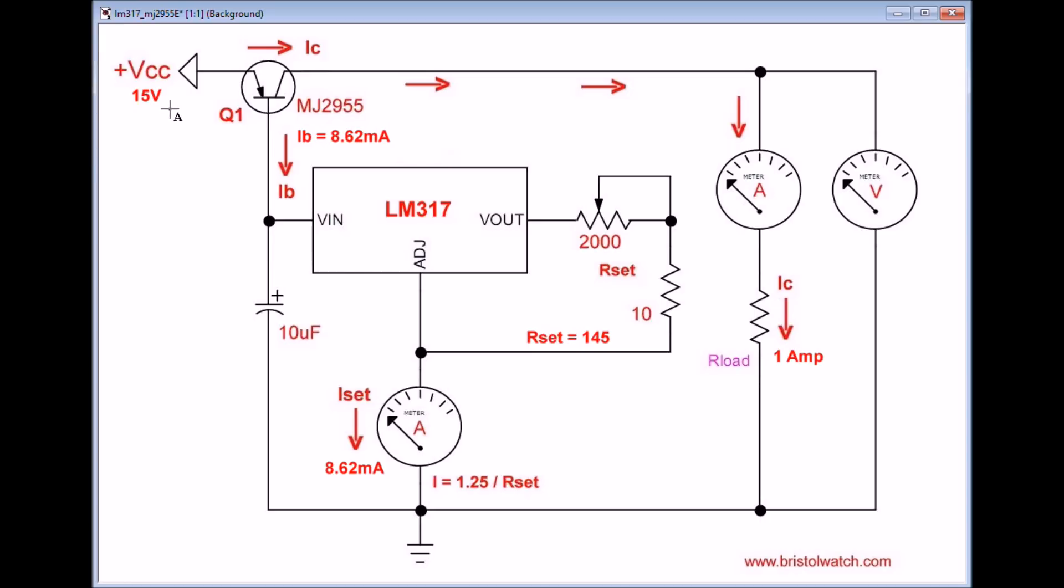We have a current flow from emitter to base called IB. IB is set by this circuit, the LM317 and this potentiometer. And I stuck in an extra 10 ohm resistor just in case I set the potentiometer all the way to zero. I won't have a virtual short from base literally to ground.